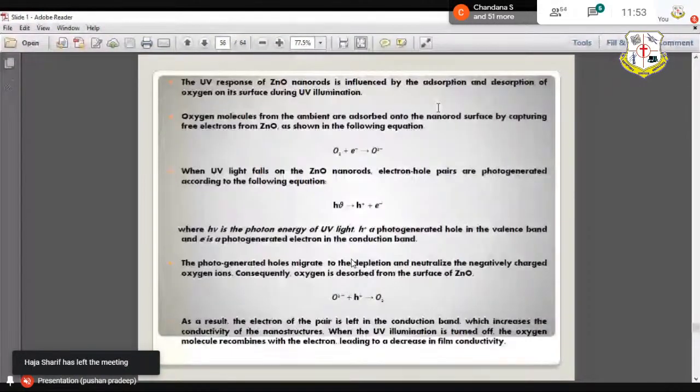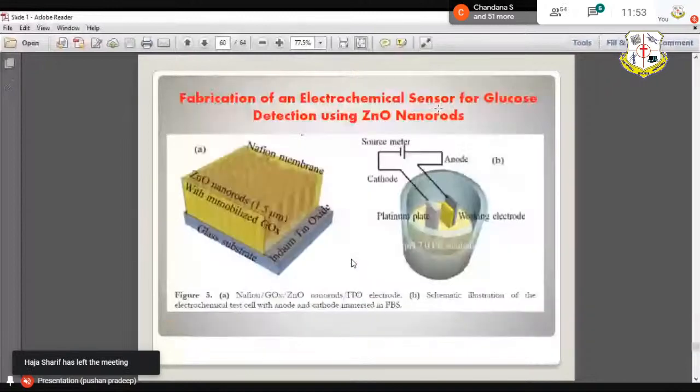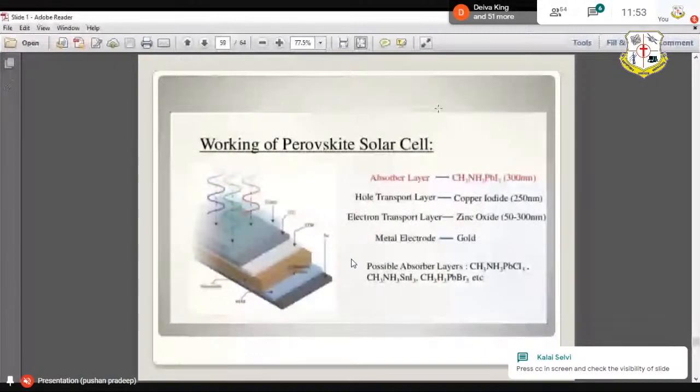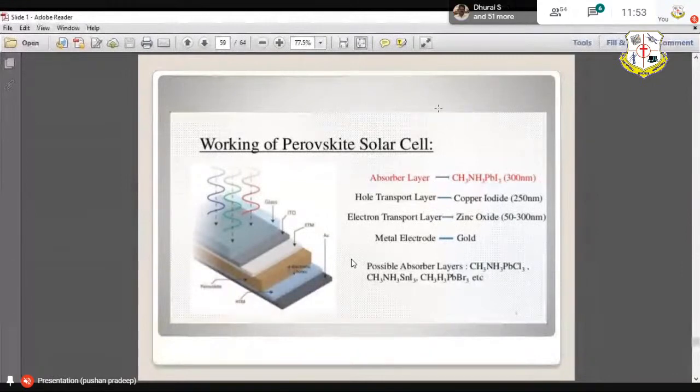The same zinc oxide nanorods are used even for construction of a perovskite type of solar cells. The zinc oxide material have shown it's used as a gas sensor devices.